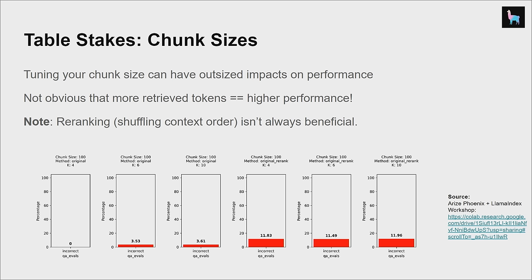This is again due to things like loss-in-the-middle problems, where stuff in the middle of the LLM context window tends to get lost, whereas stuff at the end tends to be better remembered by the LLM. We did a workshop with Arize a week ago where we showed there is an optimal chunk size given your dataset, and a lot of times when you try out re-ranking, it actually increases your error metrics.